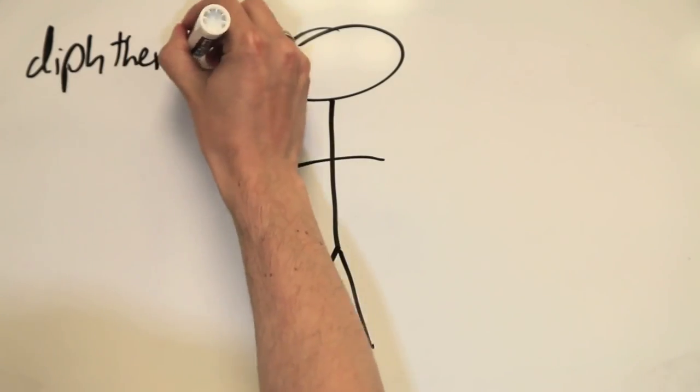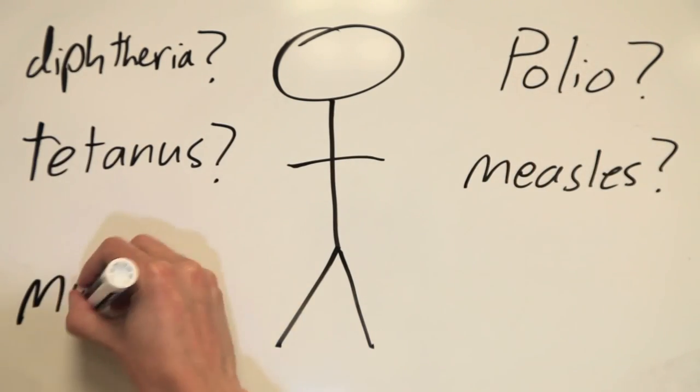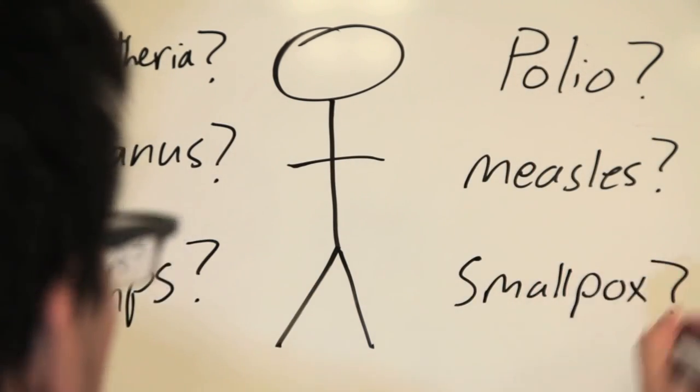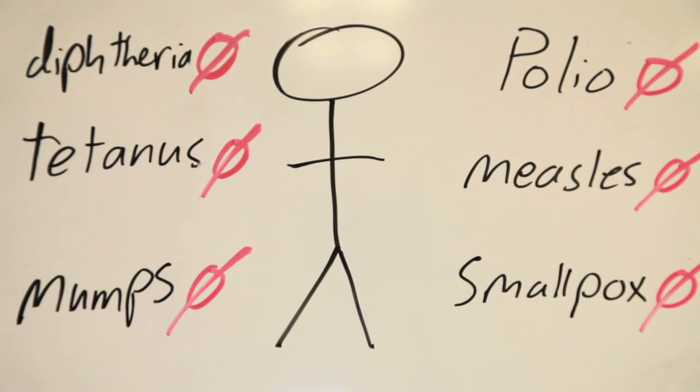How many people do you know who have had diseases like diphtheria, tetanus, polio, measles, mumps, or smallpox? If you live in the developed world, you probably don't know very many, which is a good thing because those diseases are not only unpleasant but potentially very deadly.